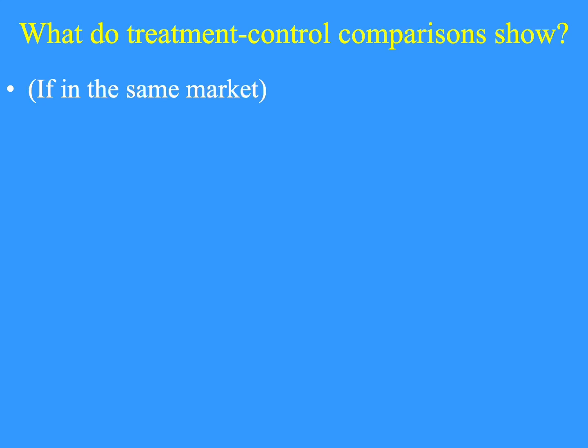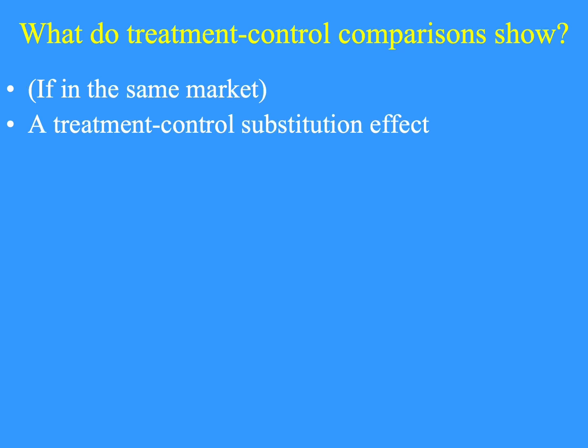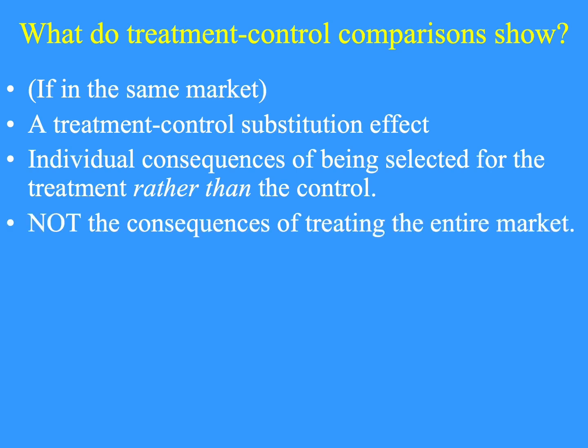What do treatment-control comparisons such as difference in differences show? One thing we have already pointed to is a treatment-control substitution effect — it shows the individual consequences of being selected for the treatment rather than the control. Remember the Vietnam draft lottery: a treatment effect is informative about the value of a favorable draft number. If the control is contaminated, we want to count that because it is part of the opportunity cost of being treated. But the treatment effect of a targeted treatment is not the consequence of treating the entire market.